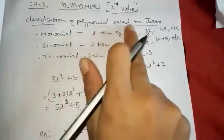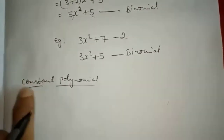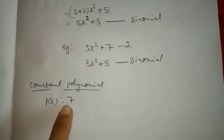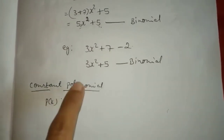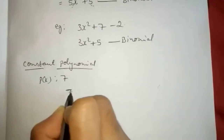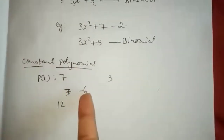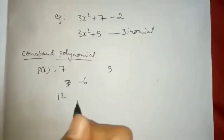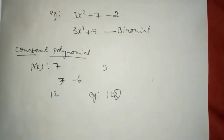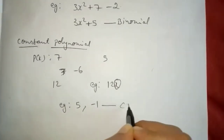So that's all about classification based on terms. Next, constant polynomial. What is constant polynomial? The name itself says constant — a polynomial which contains only the constant. For example, 7 is a constant polynomial. Also minus 6, or 5, or 12 — these are all constant polynomials. It should not contain any variable. If we take 12x, this does not become constant polynomial because a variable is there.